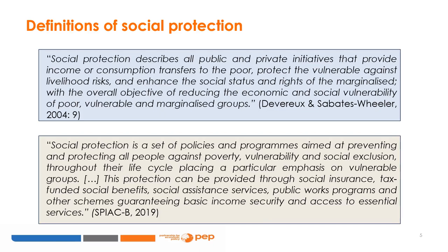A more recent 2019 definition agreed upon by many international organizations under the Social Protection Interagency Cooperation Board, SPIAC-B, states: social protection is a set of policies and programs aimed at preventing and protecting all people against poverty, vulnerability, and social exclusion throughout their life cycle, placing particular emphasis on vulnerable groups. This protection can be provided through social insurance, tax-funded social benefits, social assistance services, public works programs, and other schemes guaranteeing basic income security and access to essential services.